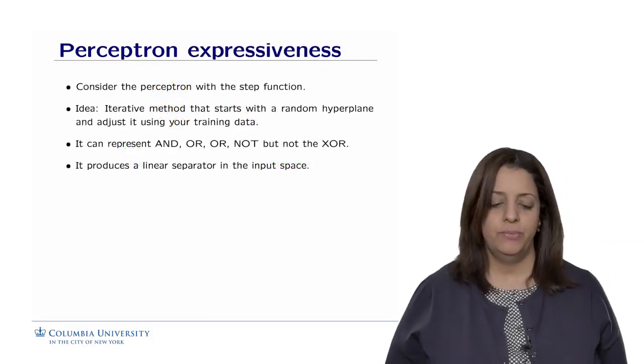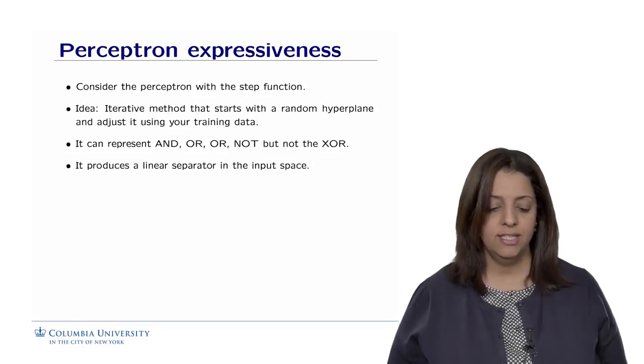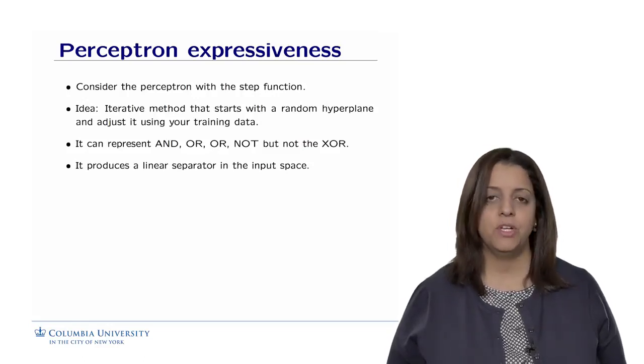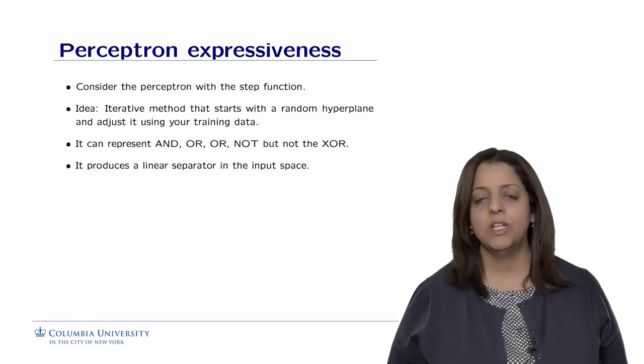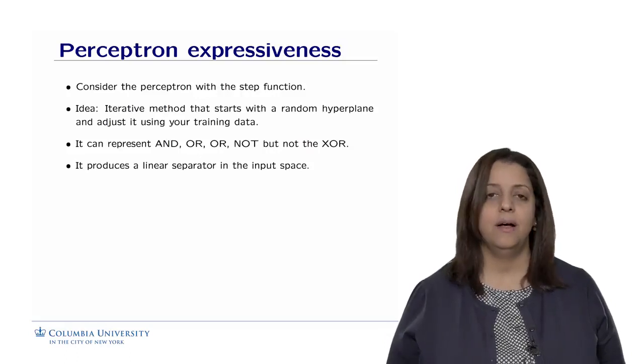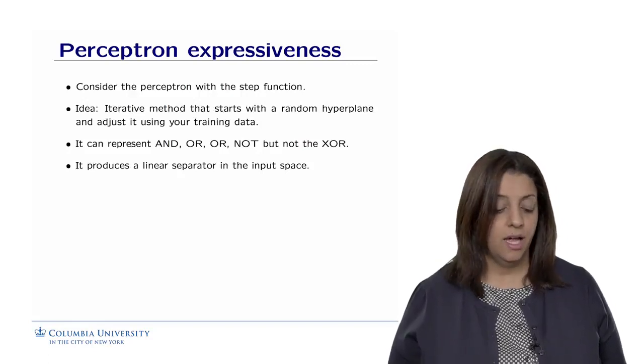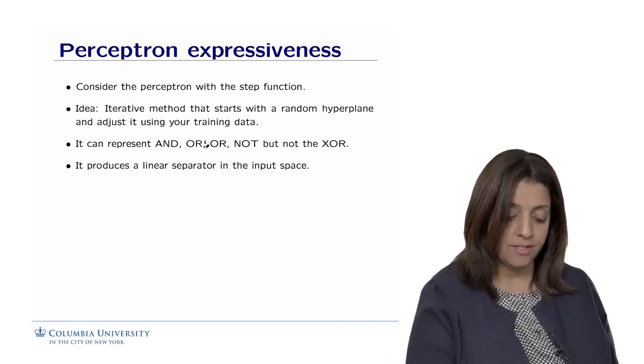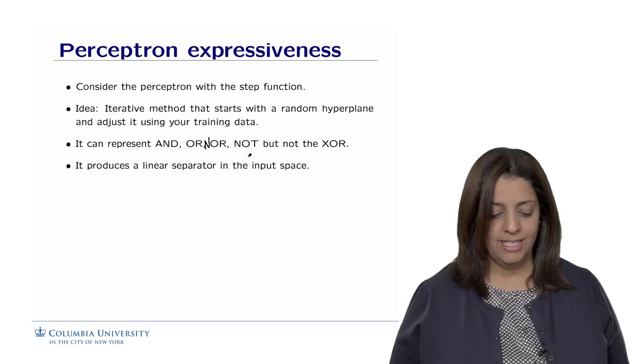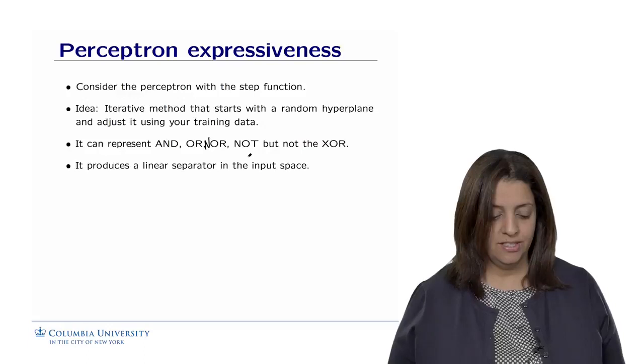One point that emerged from our lecture on perceptron is how expressive are perceptrons. If we consider the perceptrons with the step function, the idea of finding the perceptron is to adopt an iterative method that will start with a random hyperplane and tweak it using the training data until we find the separating hyperplane. This is good enough to represent lots of functions, and this includes Boolean functions like the AND, the OR, the NOR, the NOT, the NAND, et cetera. But it is not able to actually separate the data that looks like an XOR.